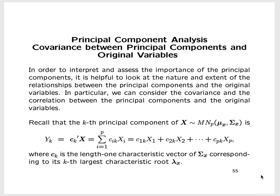Recall that the kth principal component of a random vector with covariance matrix Σ (cap-sigma), denoted y_k, is given by a linear combination of the original variables x1 to xp. The coefficients are the values in C_k, the p-by-1 length-one characteristic vector of the covariance matrix Σ corresponding to its kth largest characteristic root λ_k.